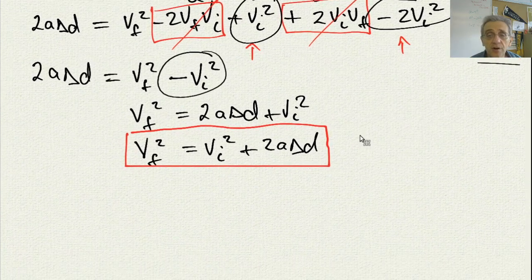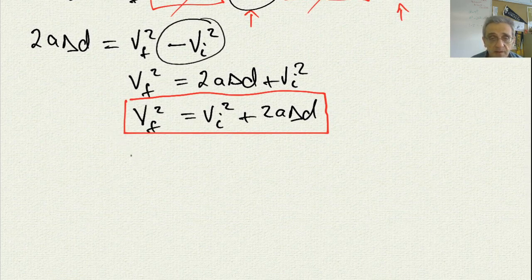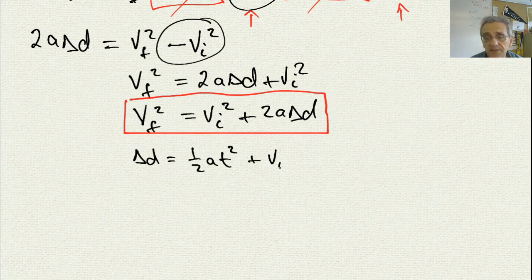Therefore, what are our three equations now? Let's write all of them down. The other ones are delta d equals 1 half at squared plus v-i-t.